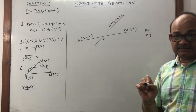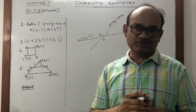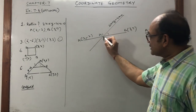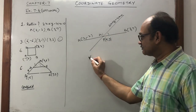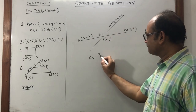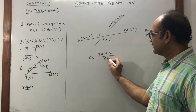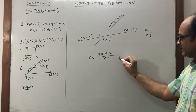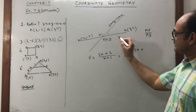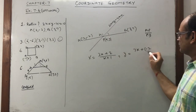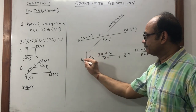The ratio is unknown, and whenever ratio is unknown we assume k is to 1. So first we calculate the point (x, y) with ratio k:1. So x equals (k into 3 plus 1 into 2) divided by (k plus 1), and similarly y equals (k into 7 plus 1 into minus 2) divided by (k plus 1). These are the coordinates of P.